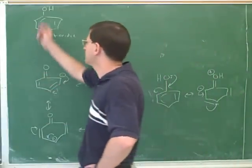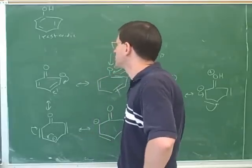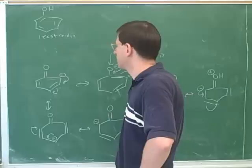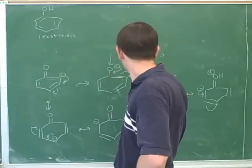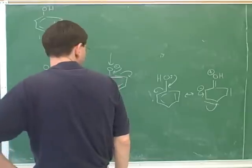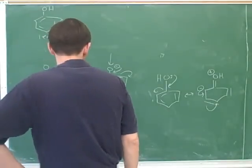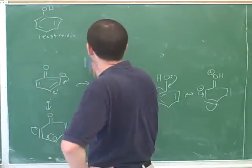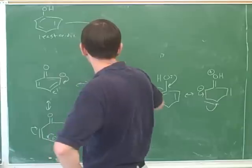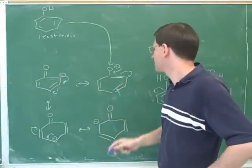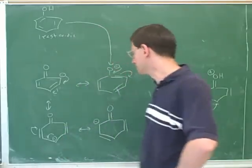Returning to phenol: it's relatively acidic because when it loses its proton, the negative charge can be stabilized by resonance. The negative charge can be on the oxygen, or on certain carbons in the ring.